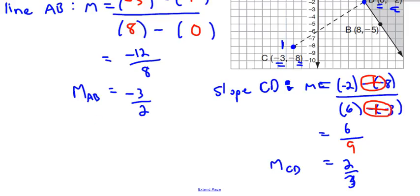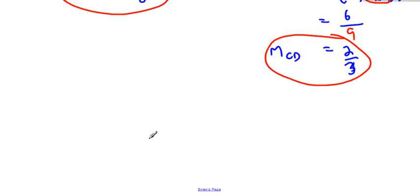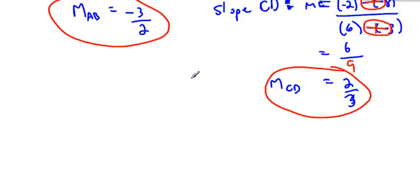So now I have the slope of line AB and the slope of line CD. And the question is, are they perpendicular? So we've already talked that perpendicular means that they're negative reciprocals. So let's check. Is one of them positive and one of them negative? Yes. If I ignore that for a second and look just at the values, is one of them the flipped fraction of the other? Yes.